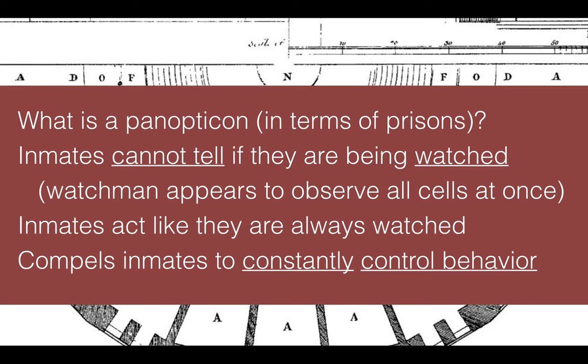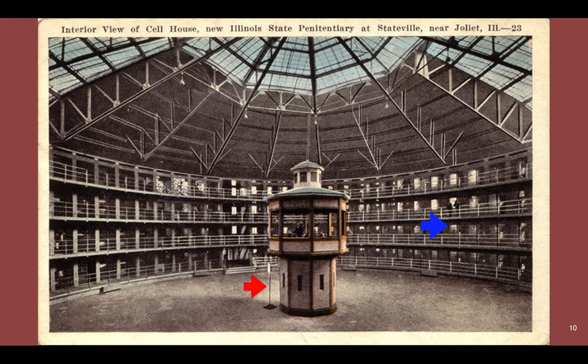Why are Panopticon prisons effective? According to Bentham, inmates within a Panopticon cannot tell if they're actually being watched, because they are so far away and there are only small slits from the watchtower — making it hard, if not impossible, for the inmate to see the watchman. Because of this, the watchman appears to be able to observe all cells at once, compelling inmates to constantly control their behavior as if they are always being watched. Here is an actual cell house in Illinois using this model.